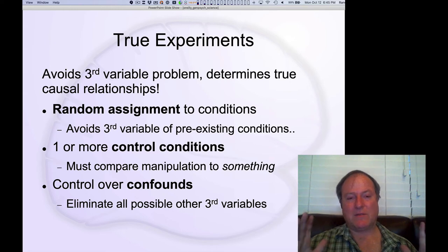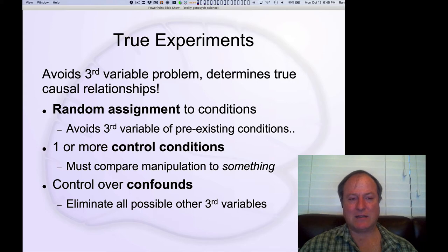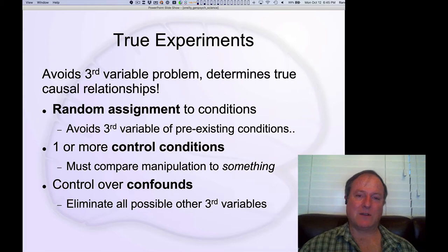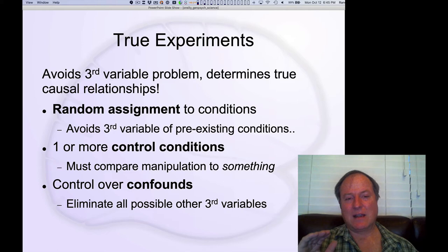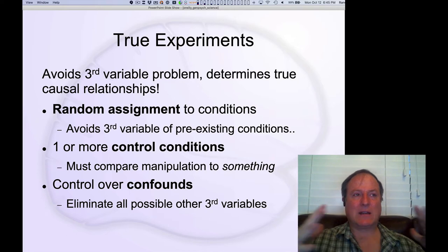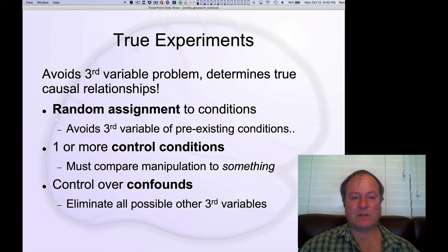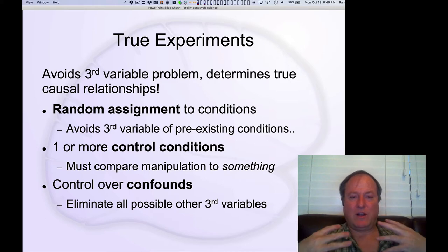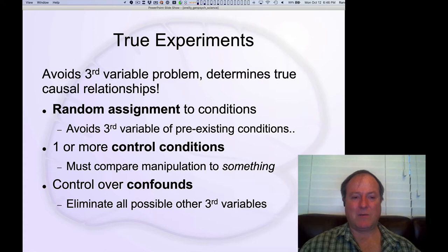We're going to talk about true experiments that really get around all those limitations in the correlational techniques. They avoid this third variable problem and really demonstrate true causal relationships. The critical thing you need to do is assign people at random to the different conditions, because that random assignment breaks all the pre-existing associations that people have — all these third variables are kind of washed away by this random assignment process.